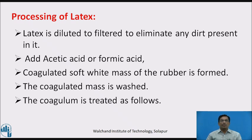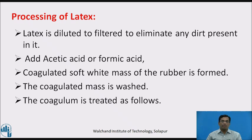The latex is diluted and filtered to eliminate any dirt present in it. To this, acetic acid or formic acid is added, which acts as a coagulant, forming a coagulated soft white mass of rubber. The coagulated mass is then washed and treated further.